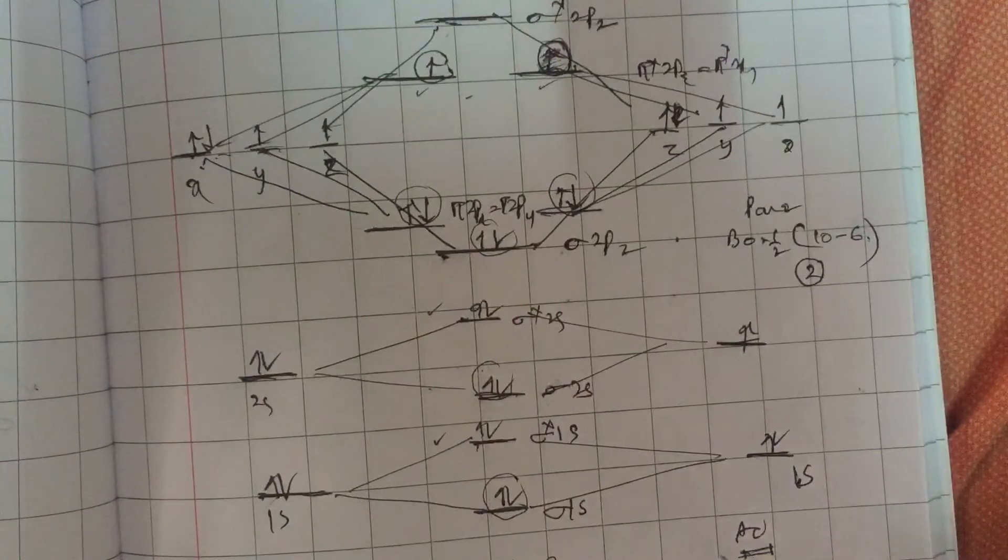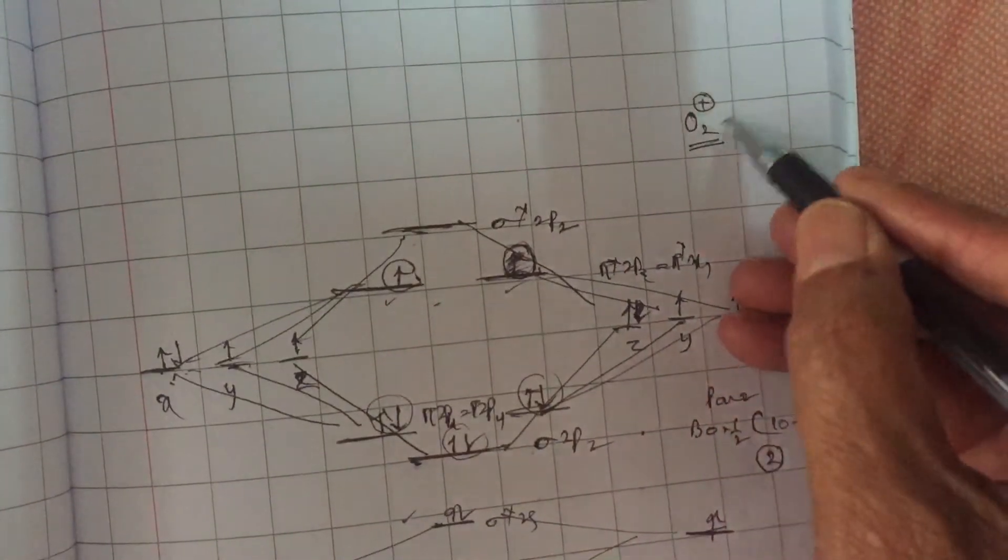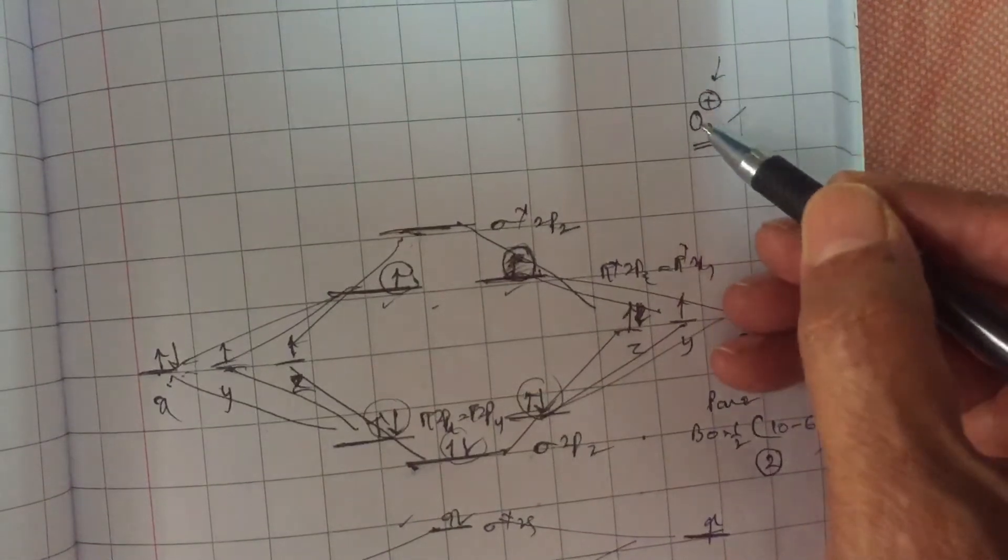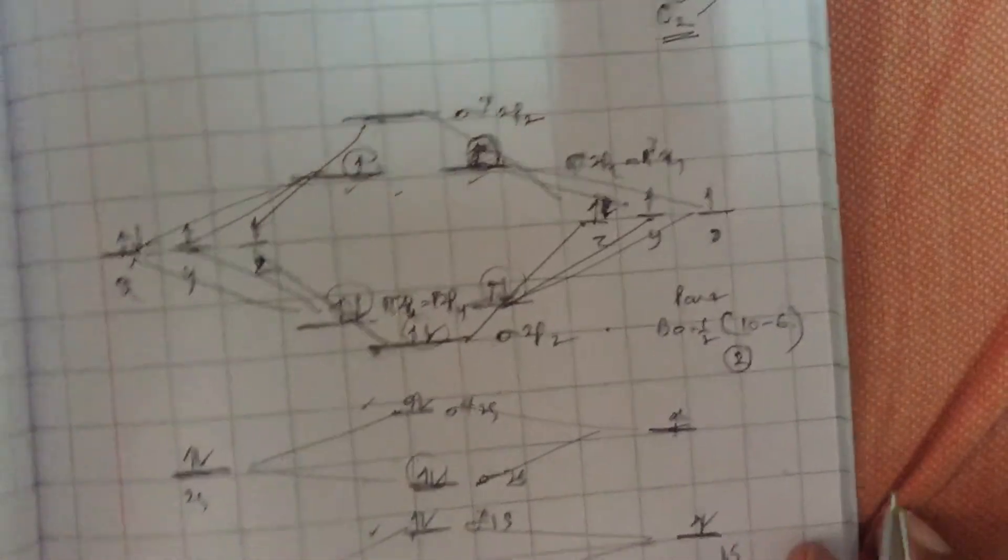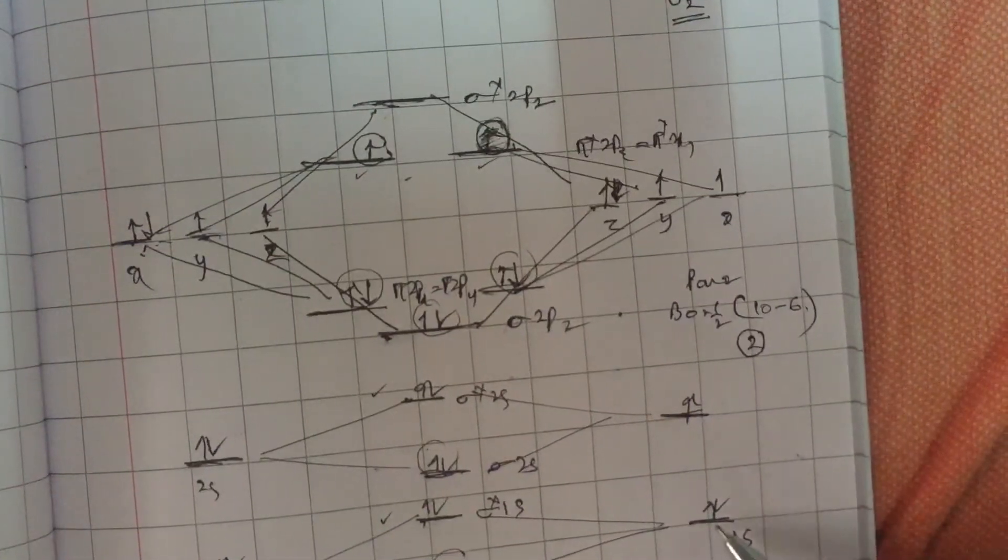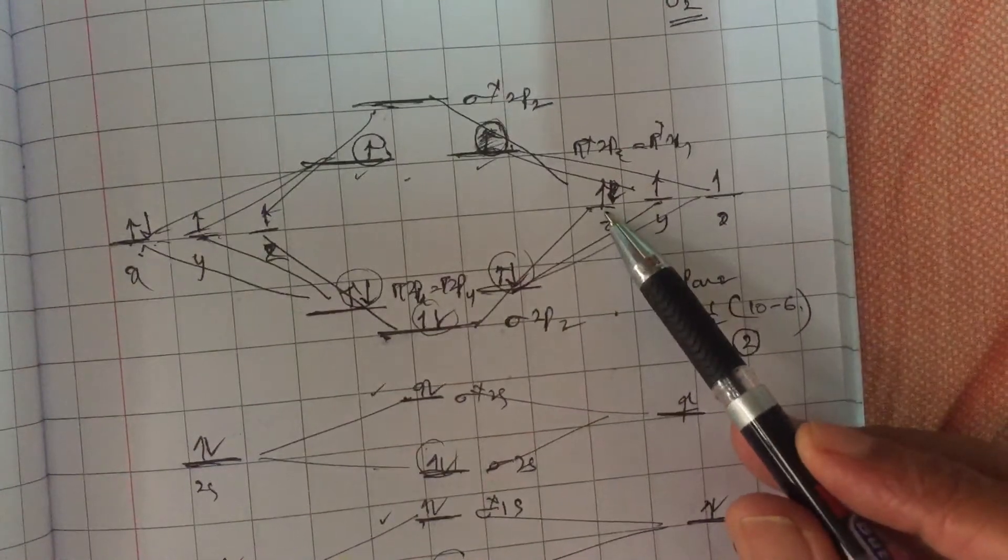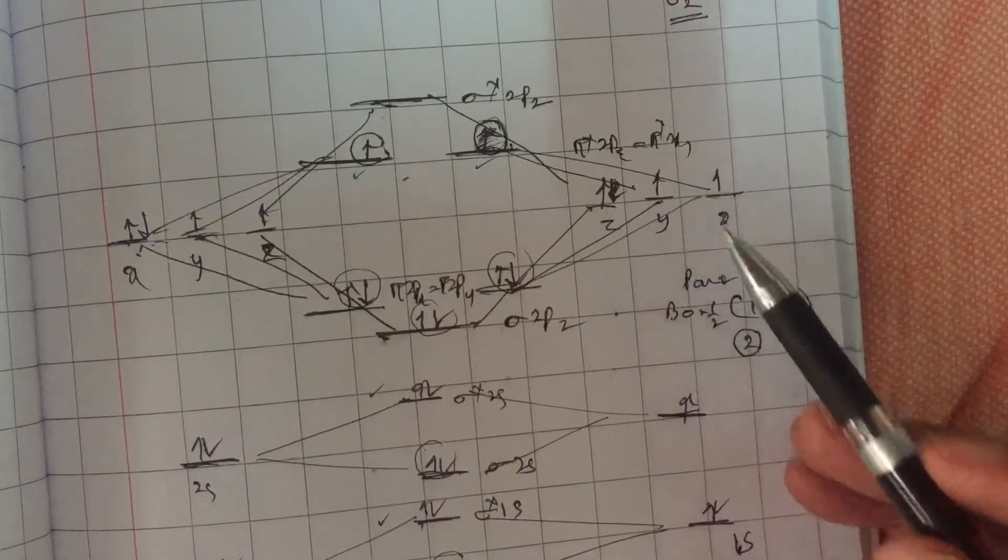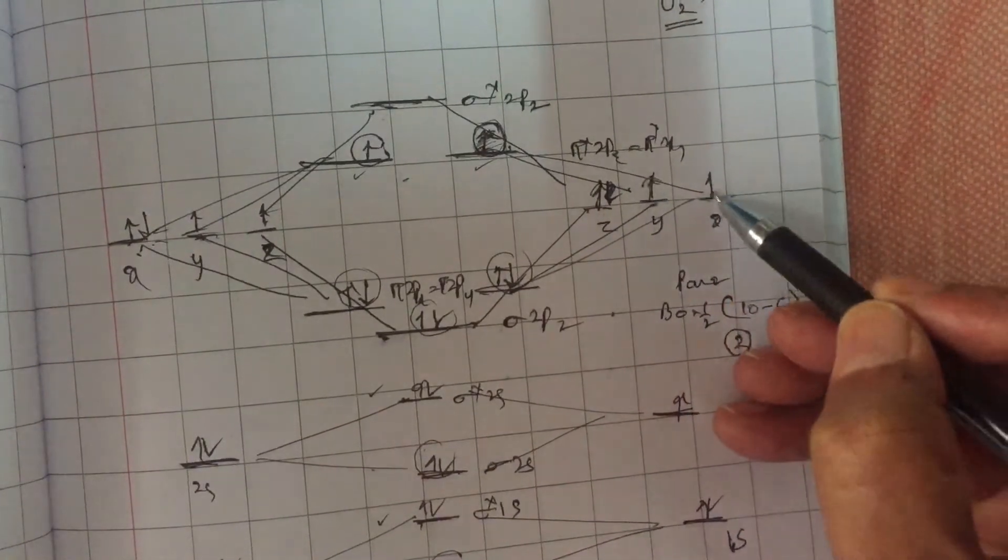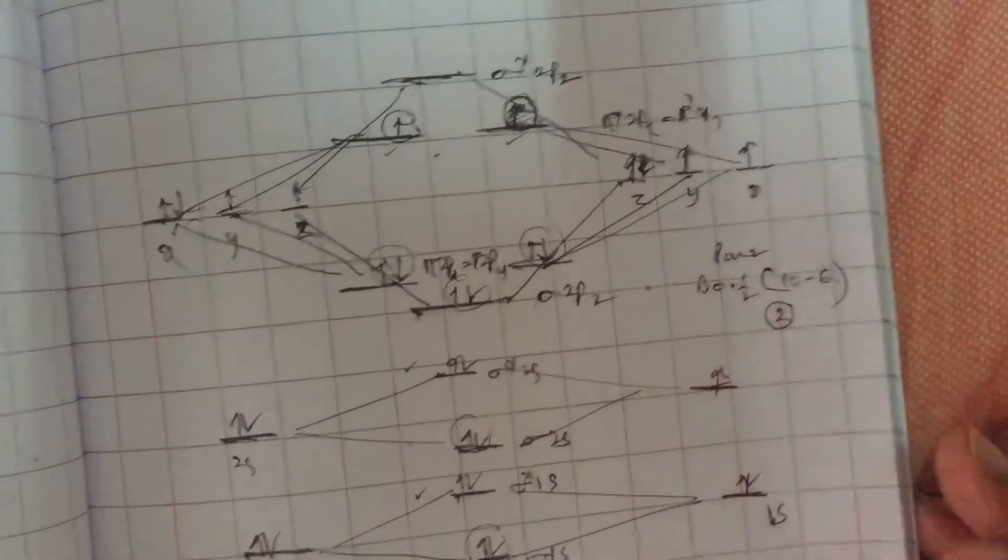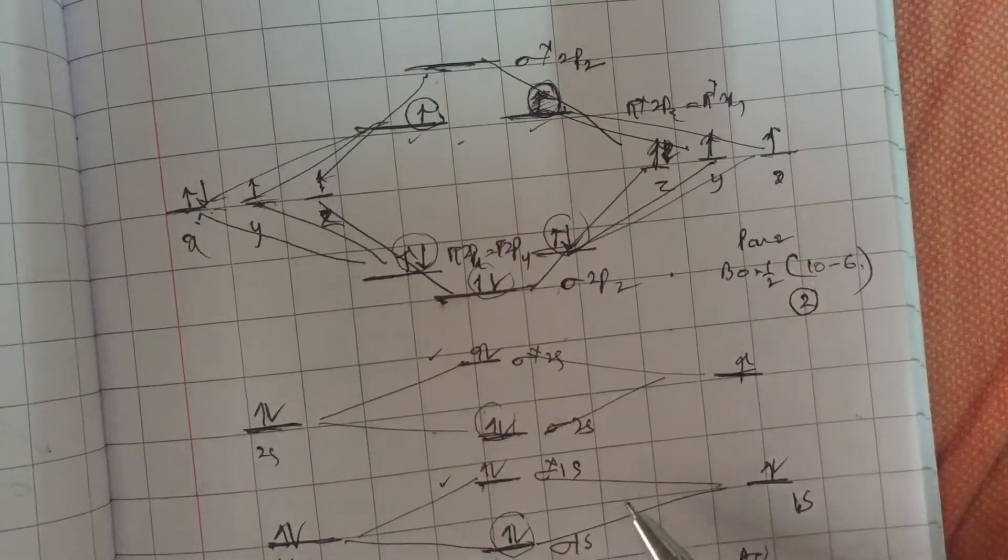Now if you consider the O2⁺ ion, the O2⁺ ion is formed because one oxygen of O2 lost an electron. So it will have instead of 8 electrons like 1s², 2s², 2px², 2py¹, 2pz¹, it will have only 3 electrons in p orbital. So total number of electrons in O2⁺ ion is 8 plus 7, 15.